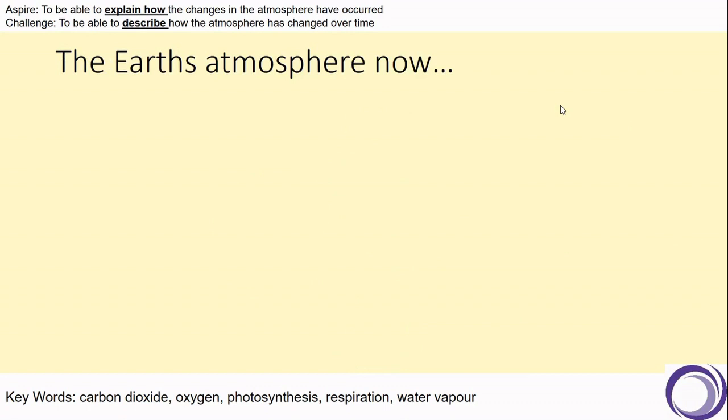So now that we've looked at the evolution of the atmosphere, let's have a look at the Earth's atmosphere now. The levels of these gases have remained constant for millions of years.